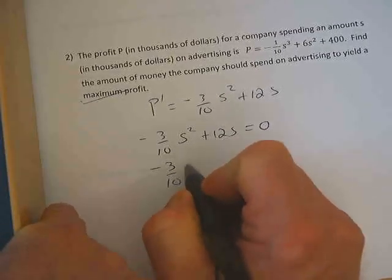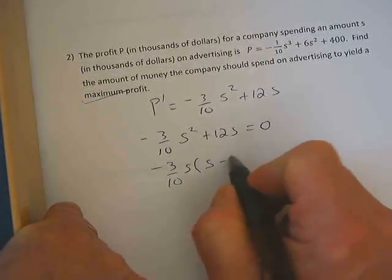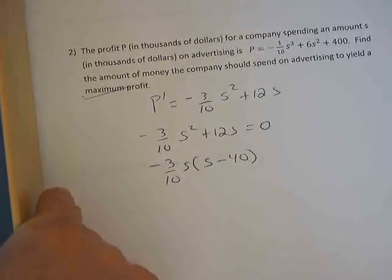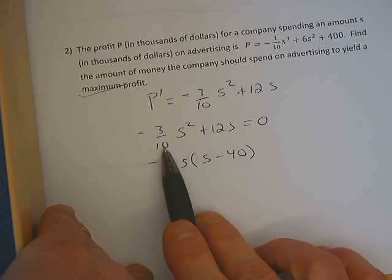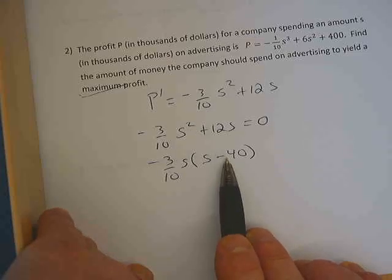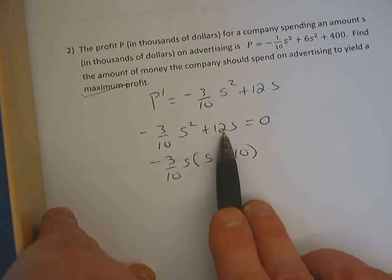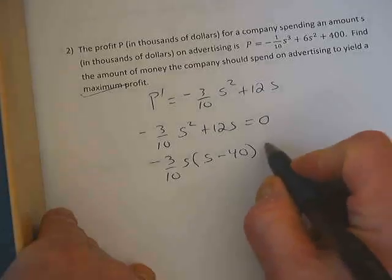I'm going to factor out a negative 3/10 s to make my life easy. And I know since I've already done this that if I factor out a negative 3/10, that this number needs to be negative 40 so that I can get 12s here.